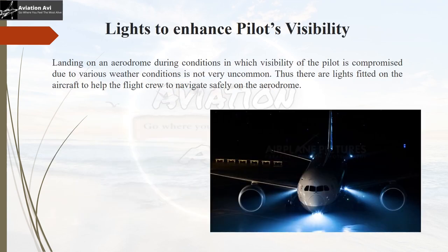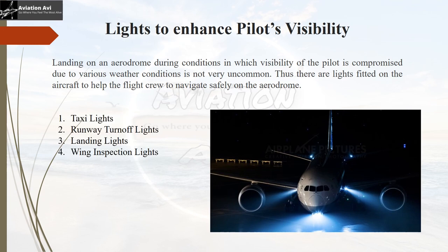Now that we have understood the lights that enhance aircraft visibility, it is time to understand lights that enhance the pilot's visibility. Landing on an aerodrome during poor visibility conditions due to various weather factors is not uncommon, so lights are fitted on the aircraft to help the flight crew navigate safely. There are four such lights: number one, taxi lights; number two, runway turn off lights; number three, landing lights; and number four, wing inspection lights.